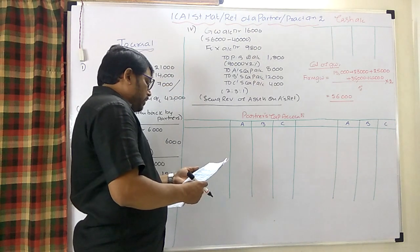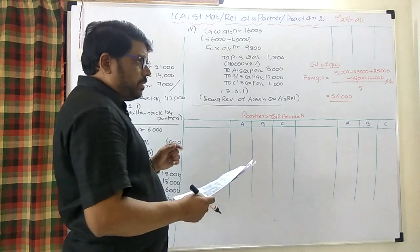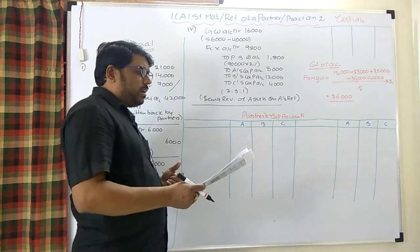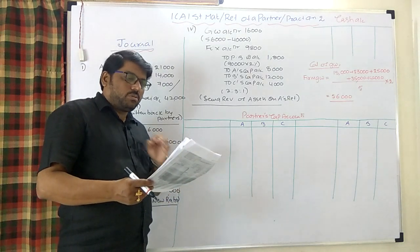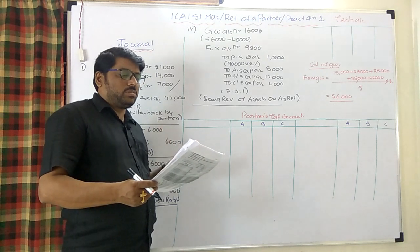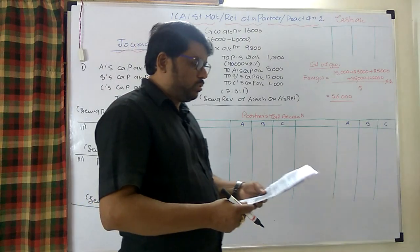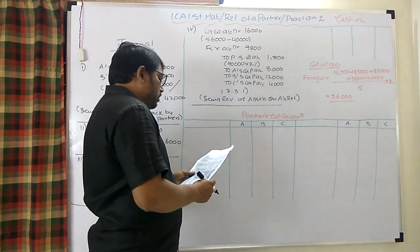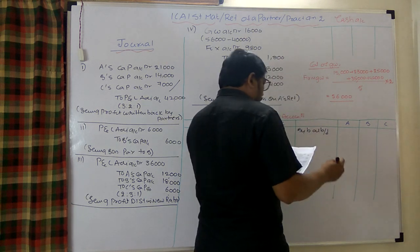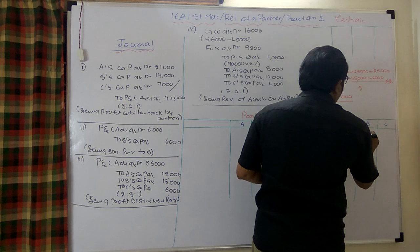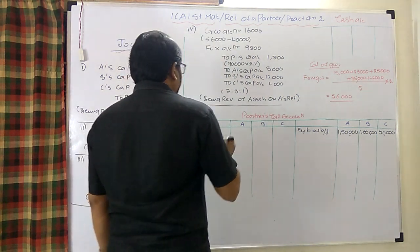After the revaluation entries, the amount payable to A is paid by B. Entry: A's capital account debit to B's capital account. Also, they decided to write off goodwill completely after settling A's account. One more entry is needed to increase provision for bad debts. Let us first complete the partners' capital accounts. Opening balances: A = 1,50,000; B = 1,00,000; C = 50,000.